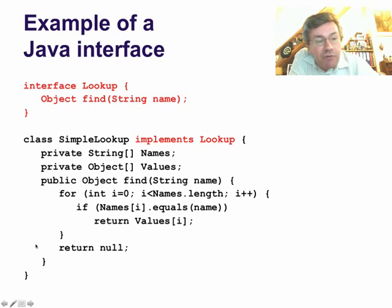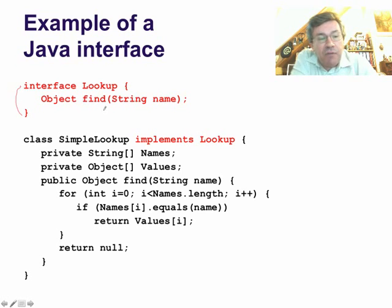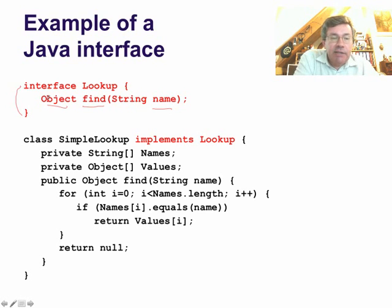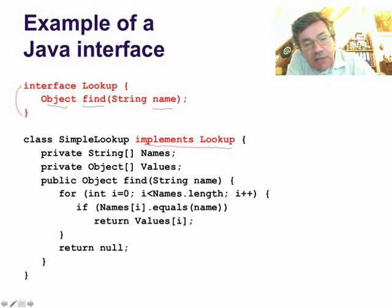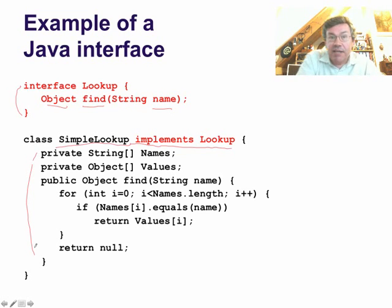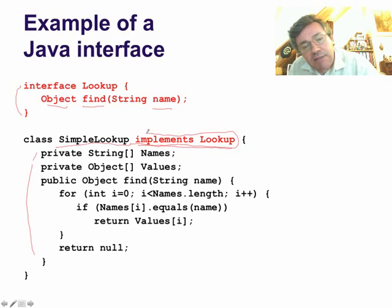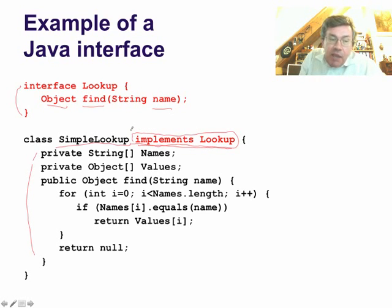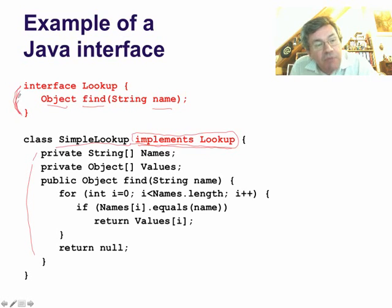Here's an example of a Java interface: the interface Lookup. Lookup is an interface which has a method find, which takes a string and returns an object. So any class of this form can be seen as an implementation of Lookup. We can enforce this by saying, for example, class SimpleLookup implements Lookup, and here we define a class that will look up an object in a list of objects indexed by string names. With the syntax implements Lookup, it's not inheritance, but it is saying that class SimpleLookup's methods obey a certain constraint — it has the shape of the interface.